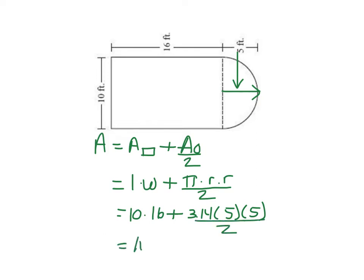I get 160 for 10 times 16 plus 3.14 times 5 times 5 divided by 2 is 39.25. And when I add these two things together, I'm going to get 199.25. And that's going to be square feet.